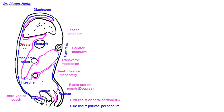The sac we have traced so far is called the greater sac. There is also another sac located mainly behind the stomach and behind the liver, extending a little bit into the greater omentum — this is called the lesser sac. Let me draw the lesser sac.